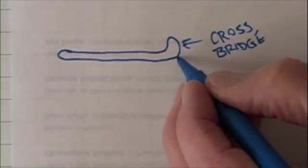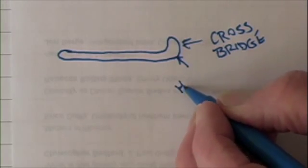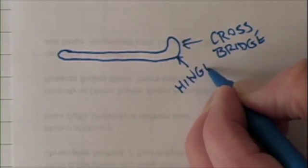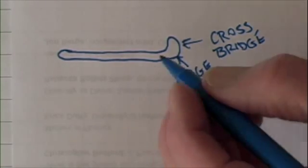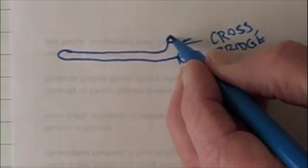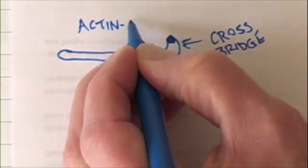The angle where the crossbridge joins the rest of it is a hinge. At the tip of the crossbridge is a binding site. This is an actin binding site.